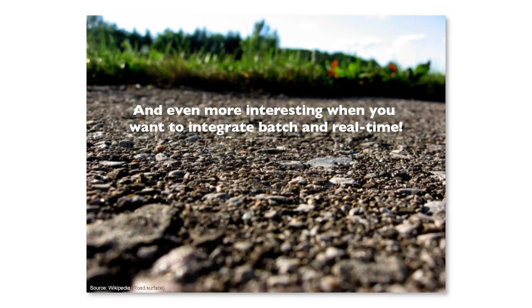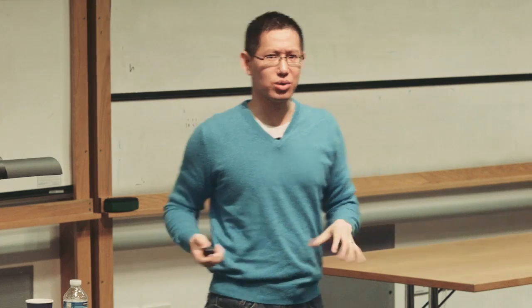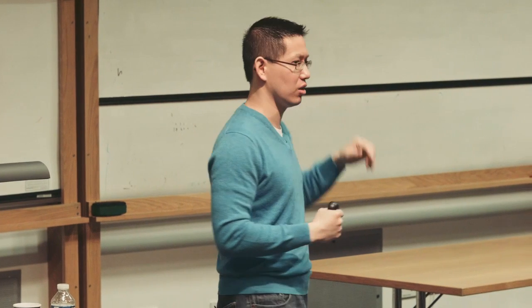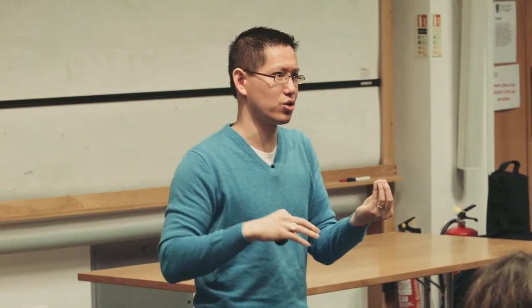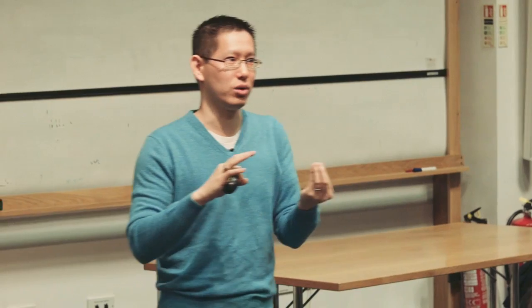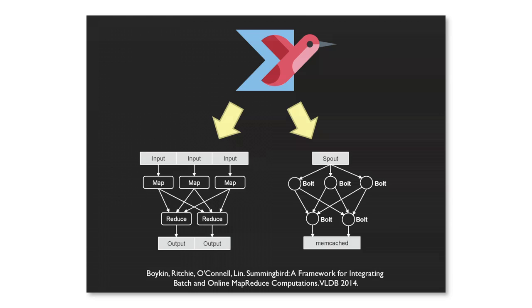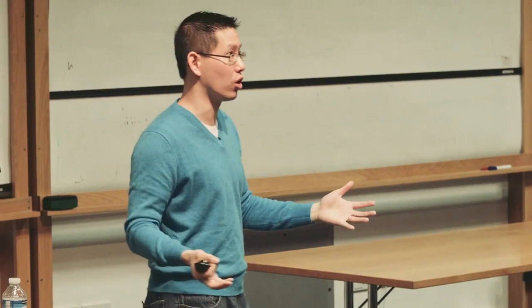One of the cool recent things at Twitter — also in a VLDB paper last year — is a framework that integrates both batch and streaming computations. The framework is called Summingbird. Through some category theory tricks — there are a lot of category theory geeks at Twitter, basically a school of hipsters — they came up with an abstraction that allows you to specify a computation that compiles down to Hadoop if it runs in batch mode, and to Storm — another real-time processing system — if you want to run it in real time.